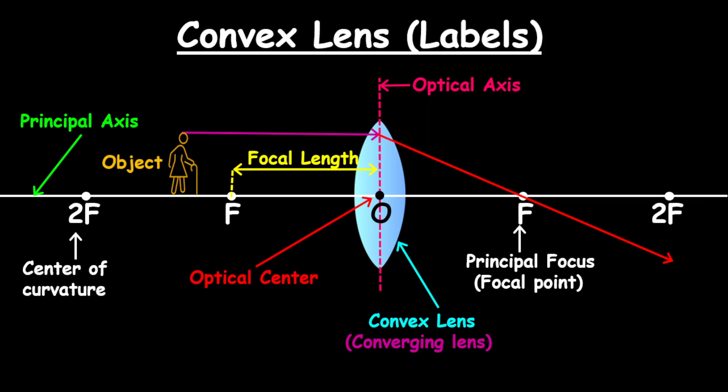We will have an object, which we'll discuss later in terms of position of the objects — that's our main concern for this lesson. The object distance is the distance from the object to the optical axis. We also have the incident ray coming from the object. The parallel incident rays are the ones that will be refracted and pass through the focal point, and that red line represents our refracted ray going through F.